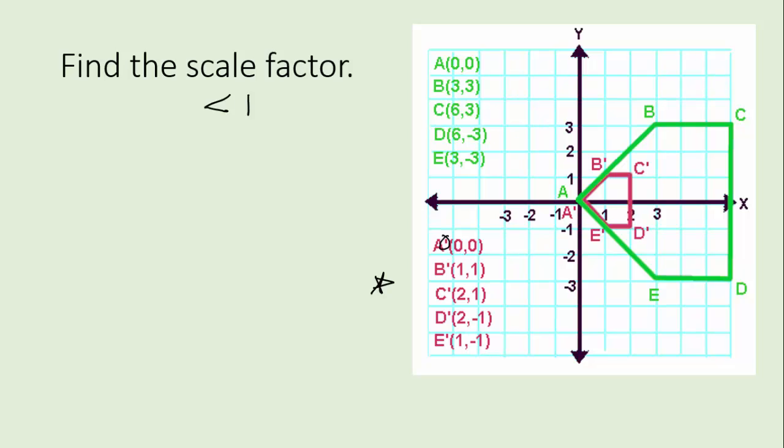Pick any point you want. I think I'll use D. So remember that D' is going to go over D. Right? And so D' is composed of 2, negative 1. Let's use the x-coordinates. So the x-coordinate of D' is 2. And the x-coordinate of D is 6. So it would appear that our scale factor, if we reduce here, is 1 third. Now, that's how you use ordered pairs to find it.